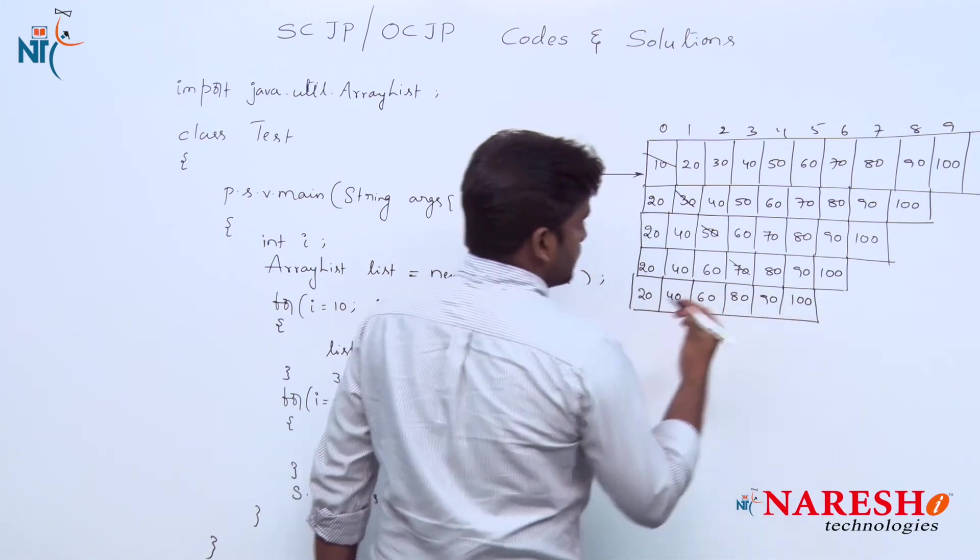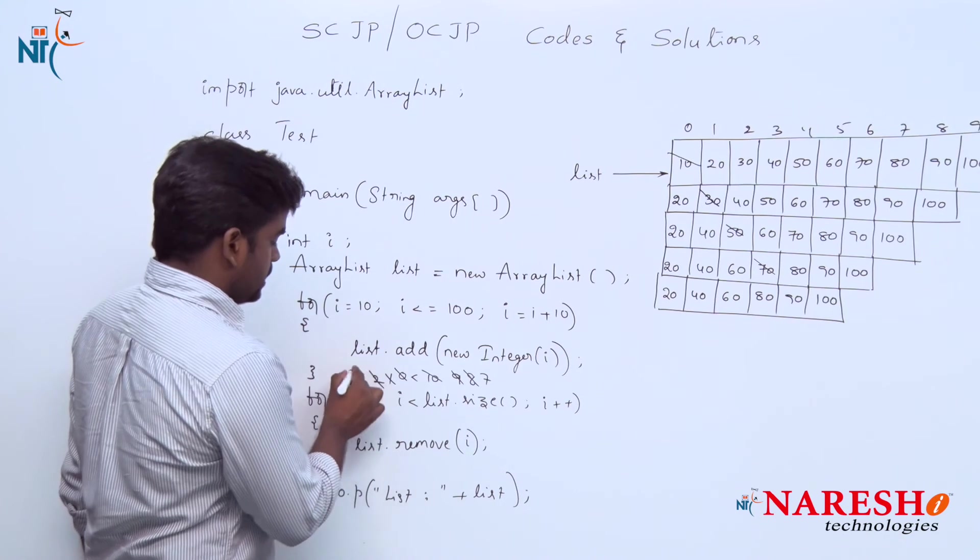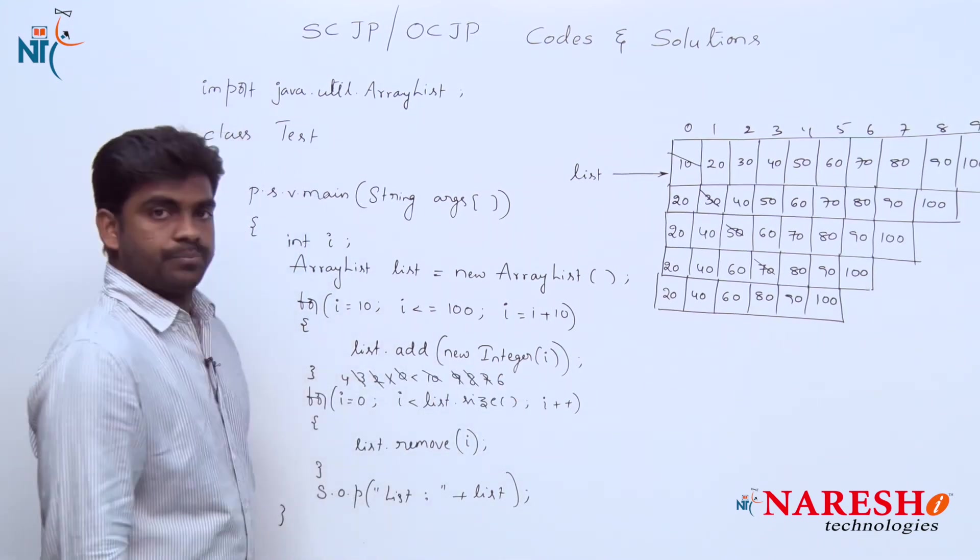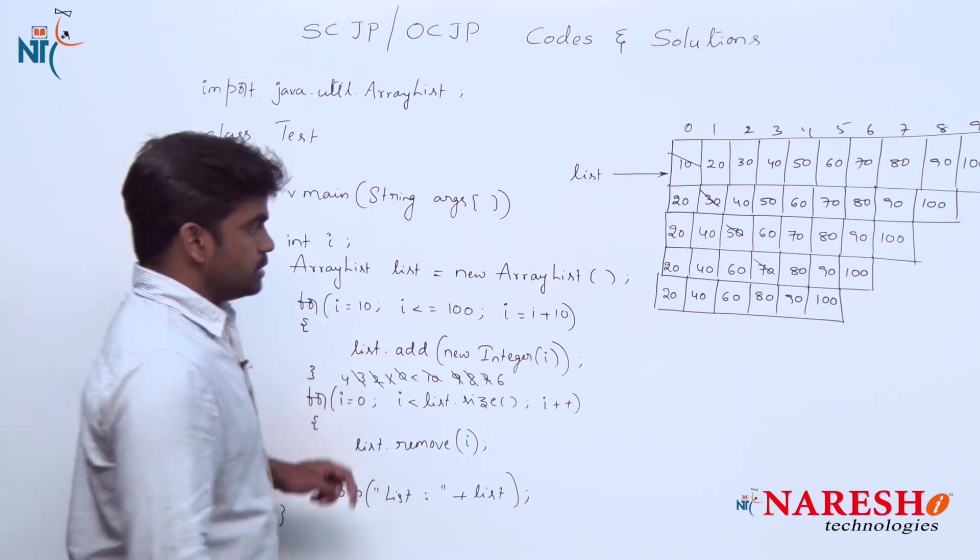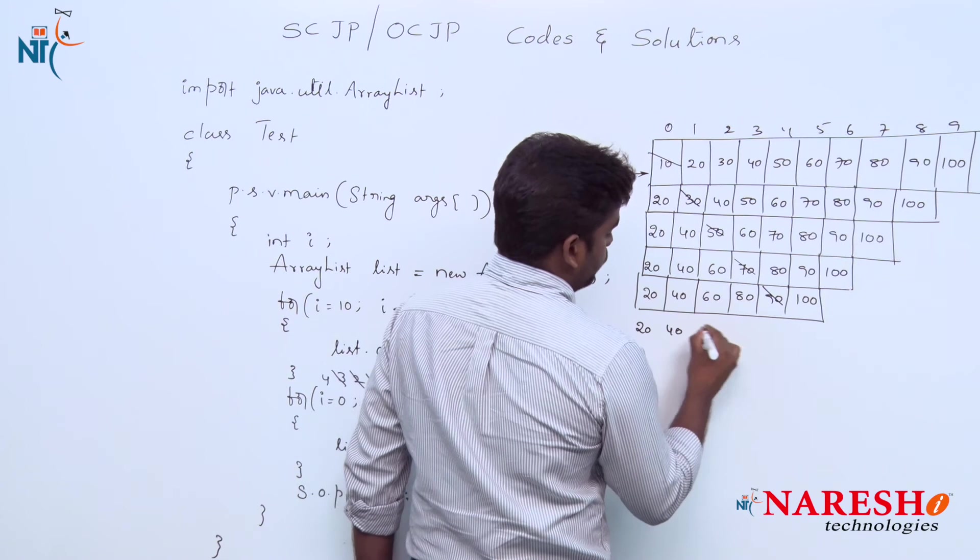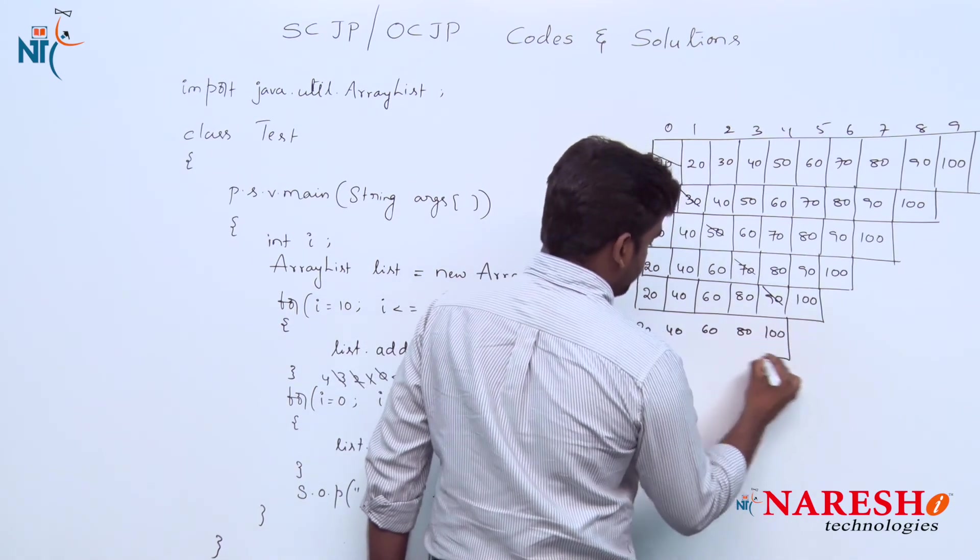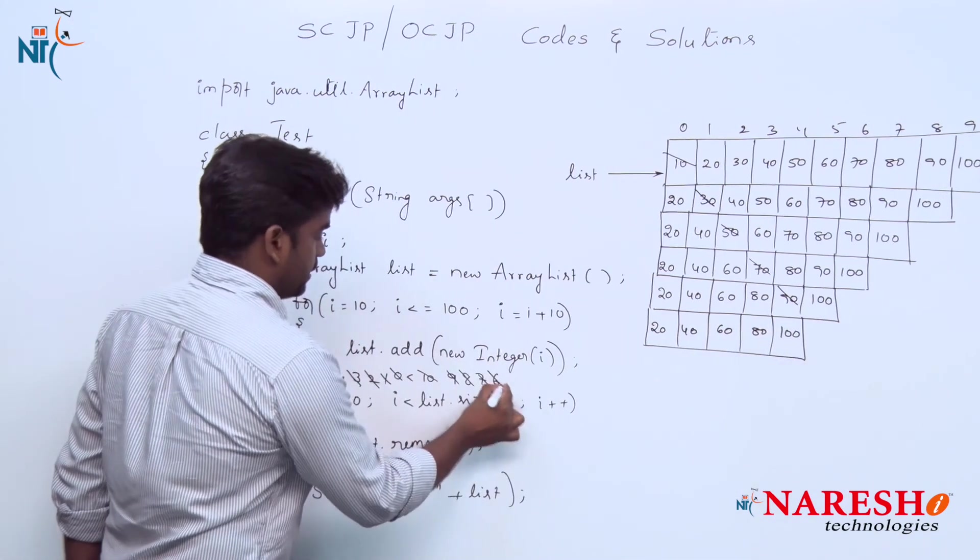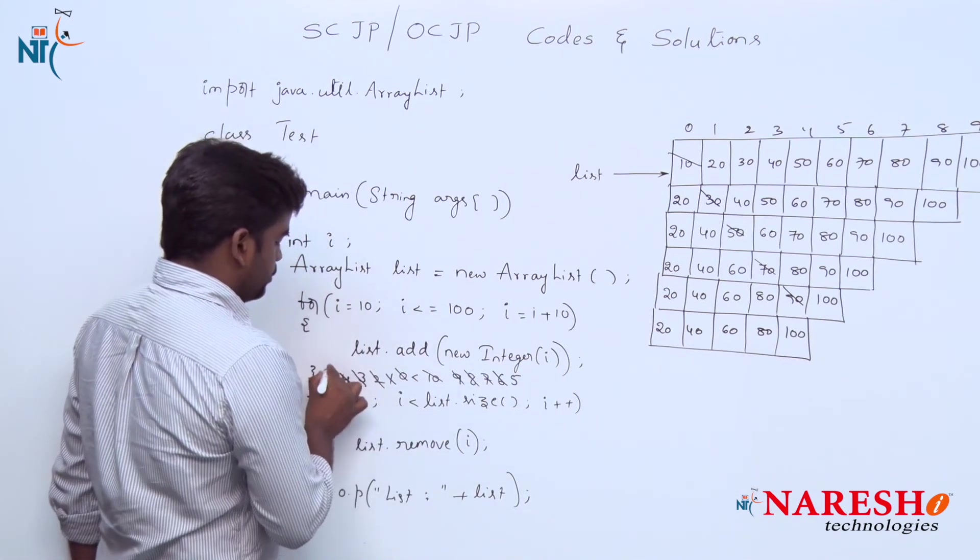Next, the size becomes 4 and it will become 6. The element at fourth position will be removed, which is 90. So 20, 40, 60, 80, 100. Next the size becomes 5 and i value becomes 5.